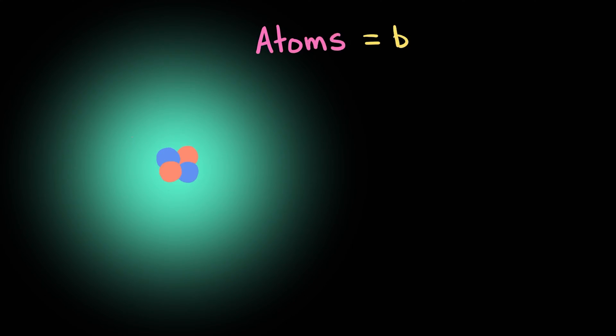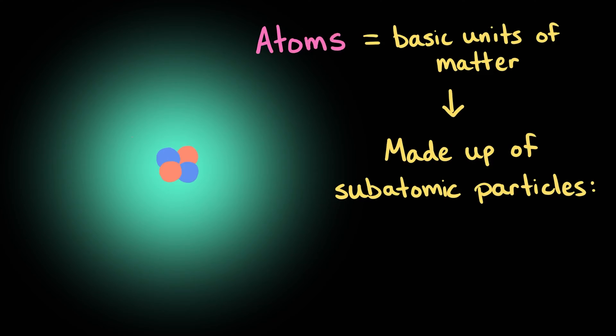Atoms are tiny particles that are basic units of matter, like building blocks. But atoms themselves are made up of even smaller subatomic particles called protons, neutrons, and electrons.